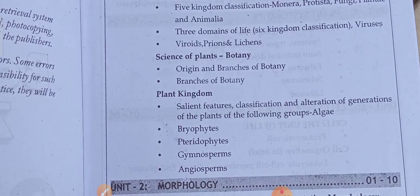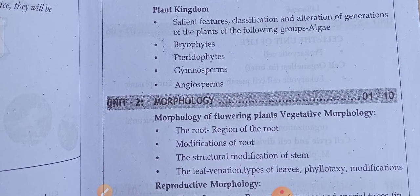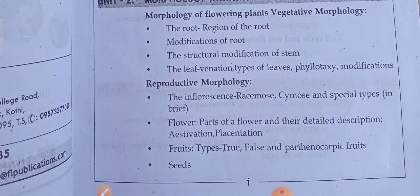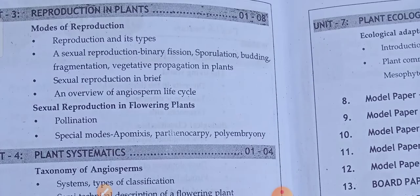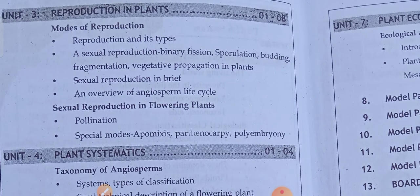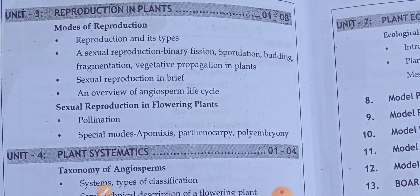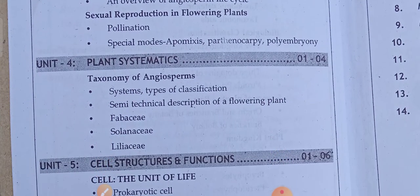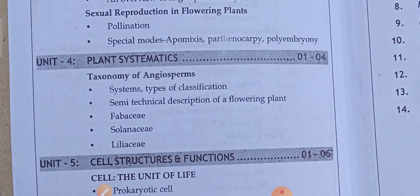Next, unit two: morphology of flowering plants — vegetative morphology and reproductive morphology. Then unit three: reproduction in plants — asexual reproduction and sexual reproduction of flowering plants. Next, unit four: plant systematics — taxonomy of angiosperms.